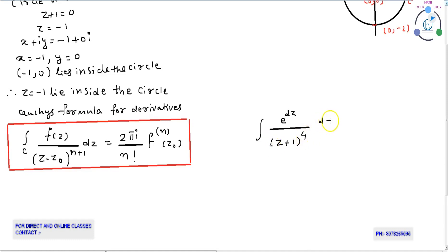Comparing with Cauchy's integral formula for derivatives, n plus 1 equals 4, so n equals 3.